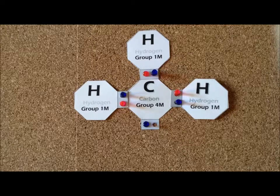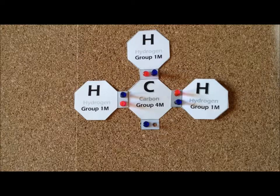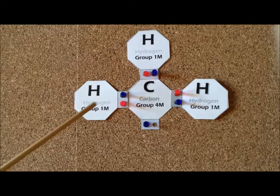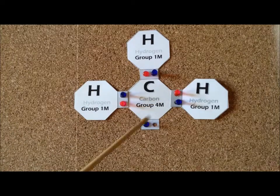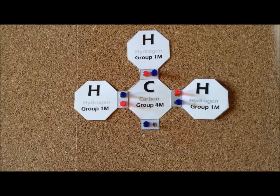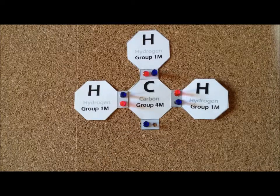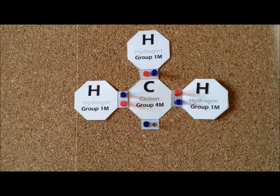Right away we recognize that we have an odd number of electrons, so we're likely to have a free radical species. We can satisfy the duet rule for the three hydrogens, but we are unable to complete the octet for carbon. So we have an unpaired electron and we would expect that methyl radical would be reactive. And it turns out that it is.